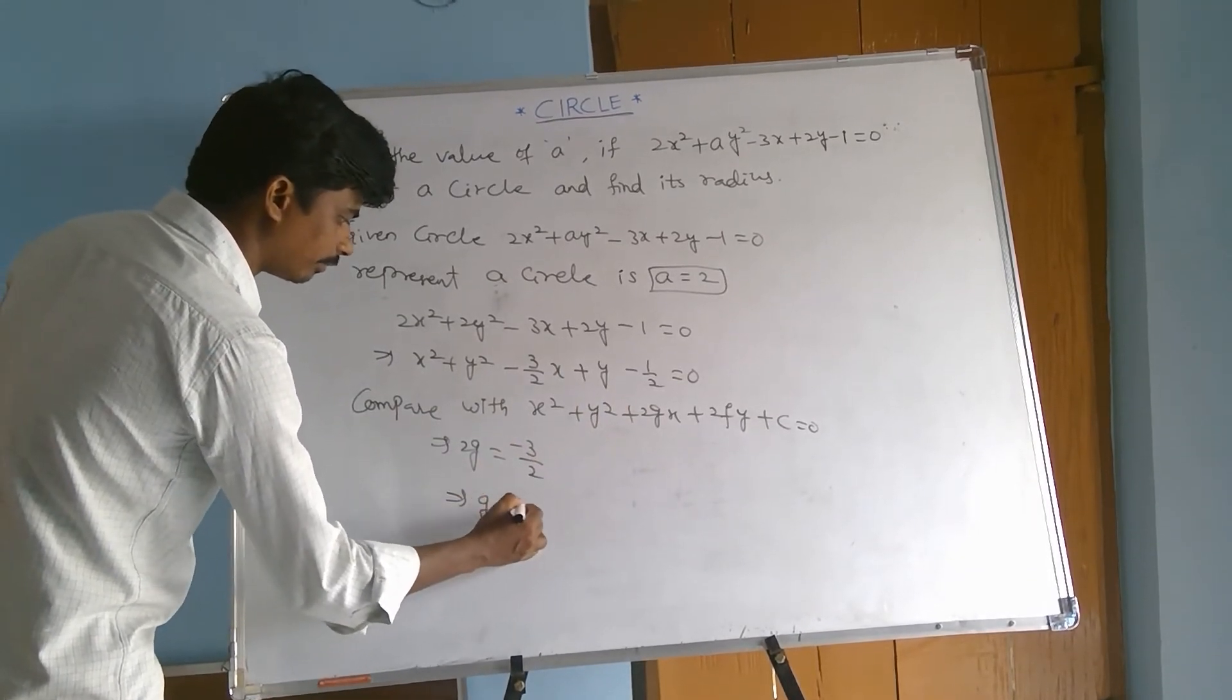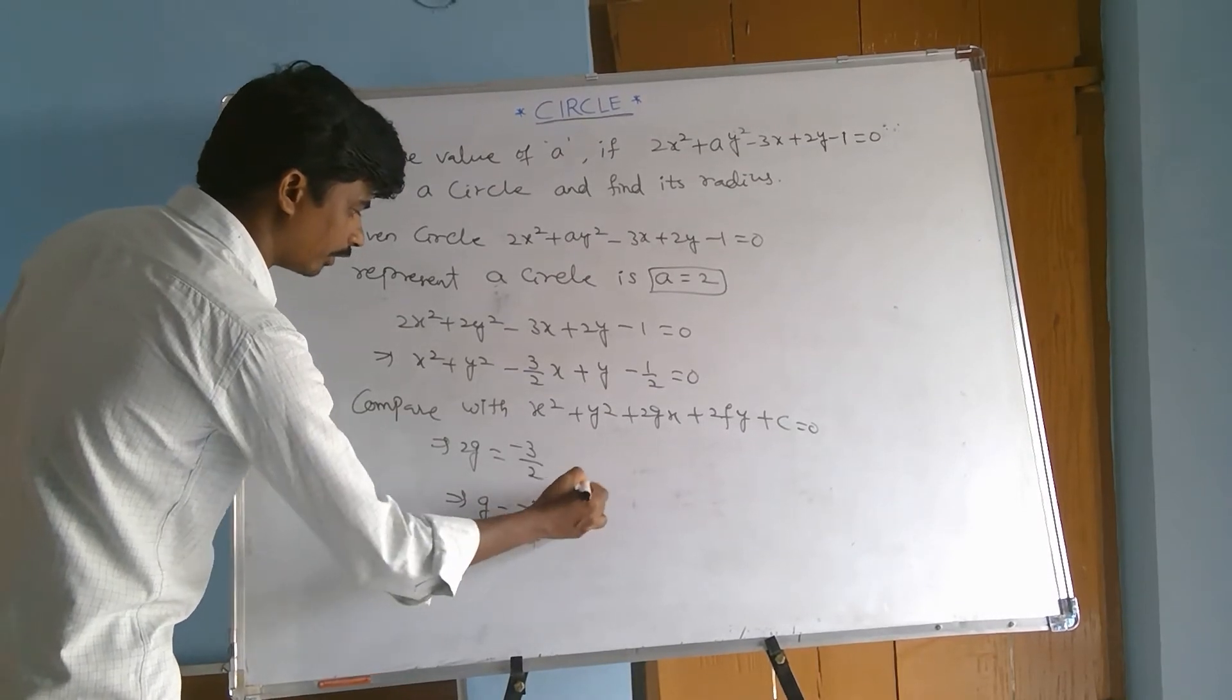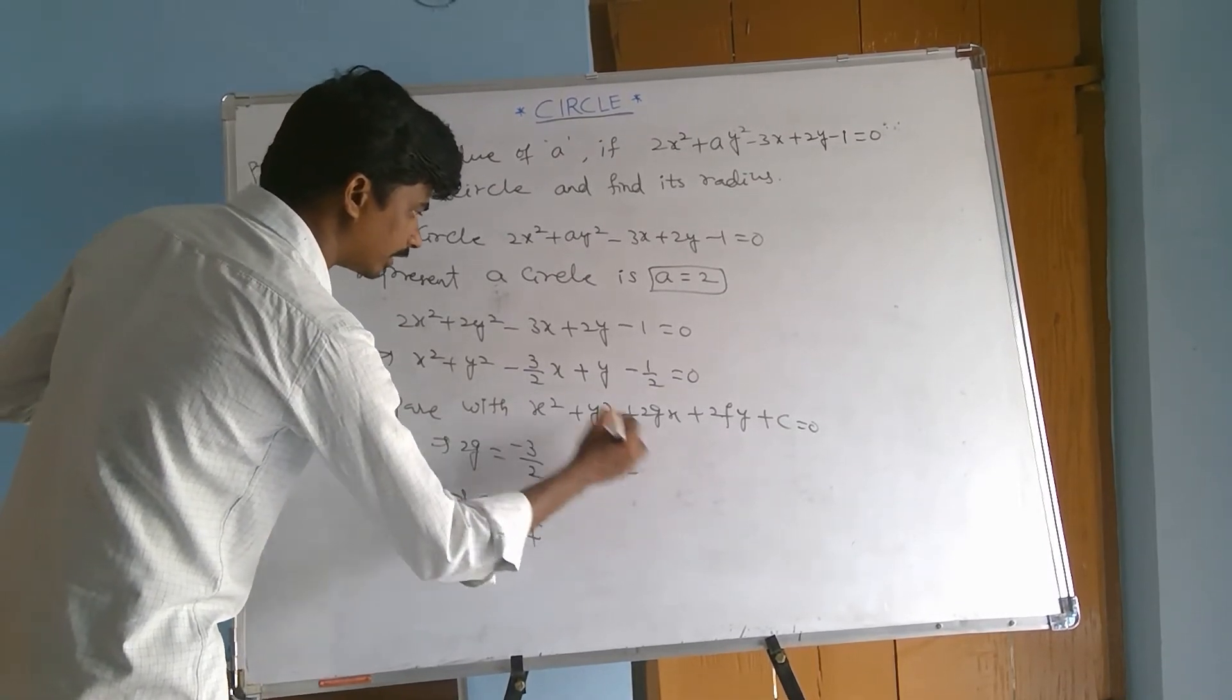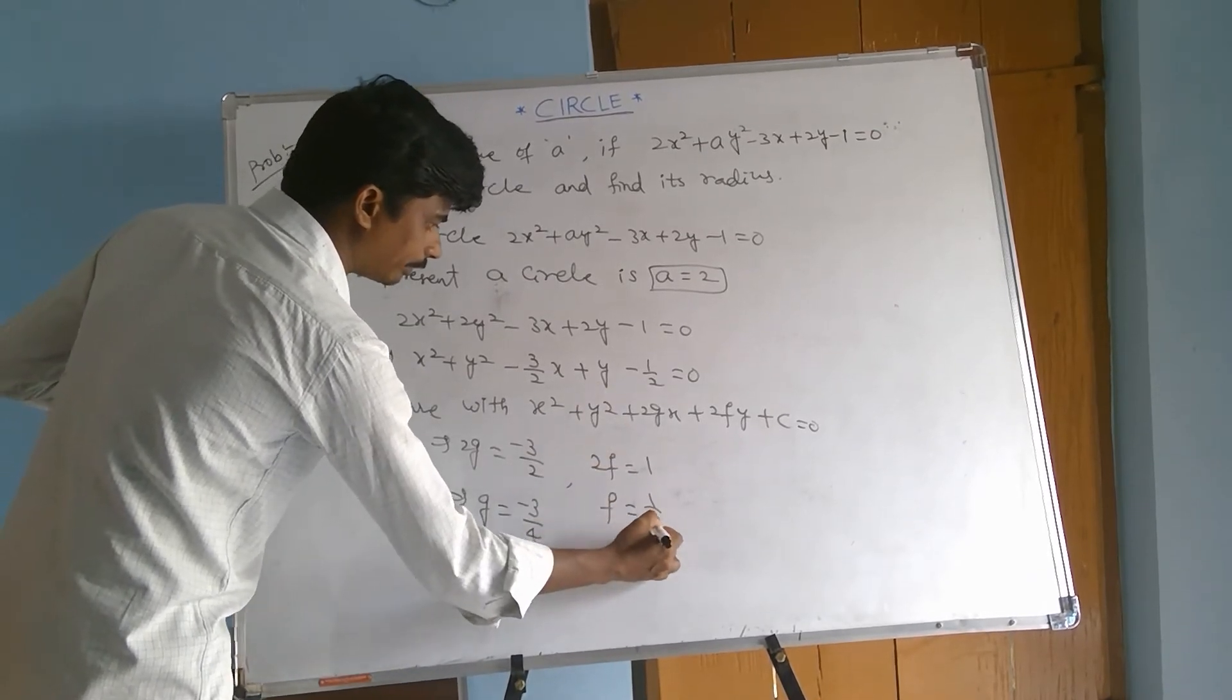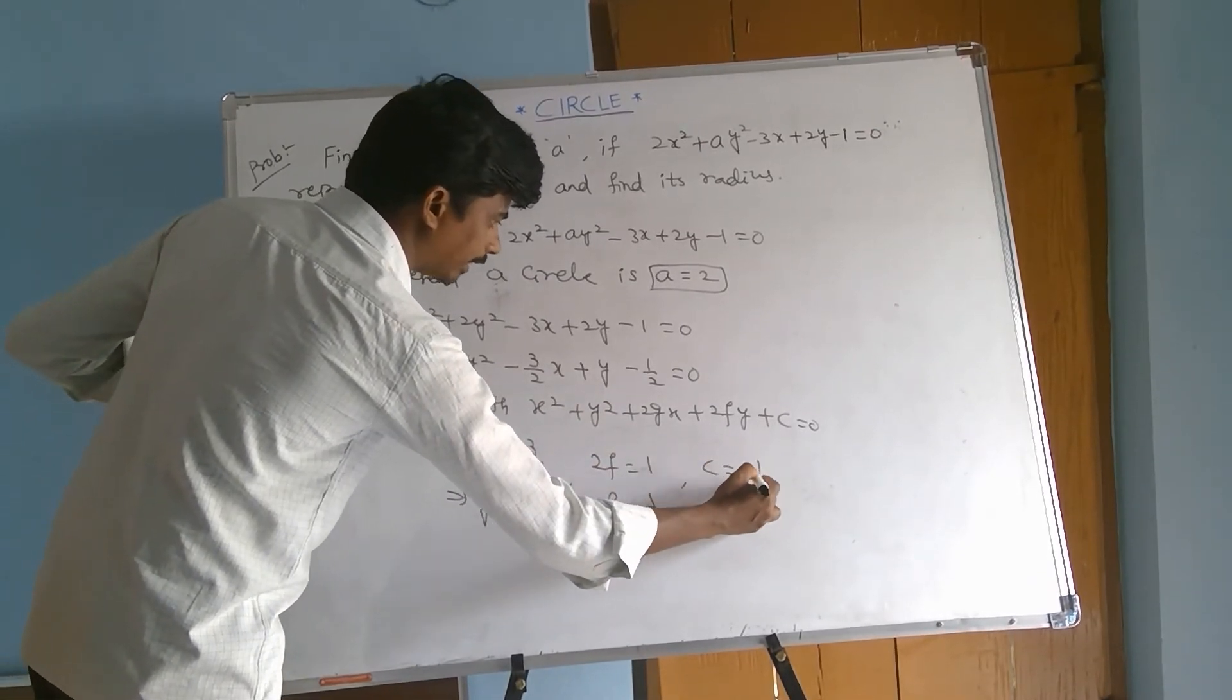That implies g equal to minus 3 by 4. And 2f equal to 1, so f equal to 1 by 2. And c equal to minus 1 by 2. Remember this.